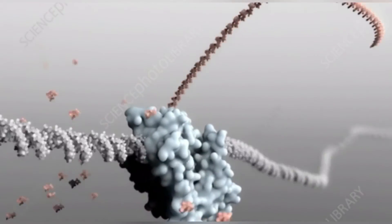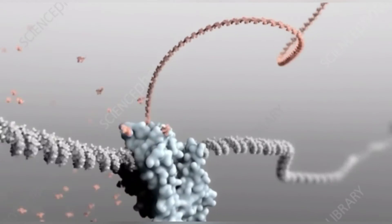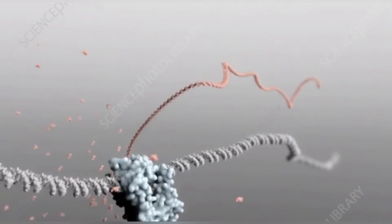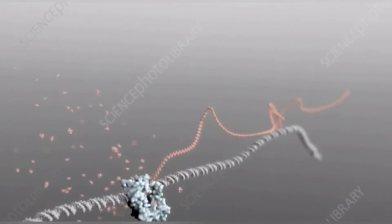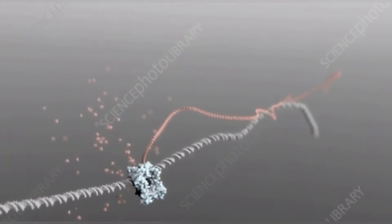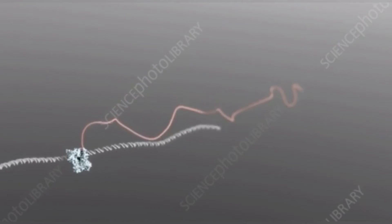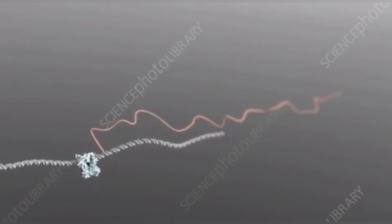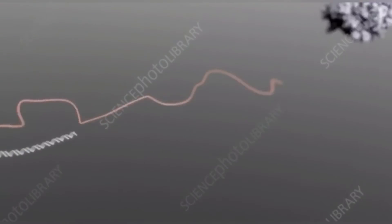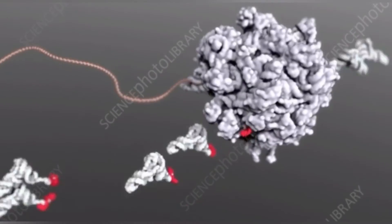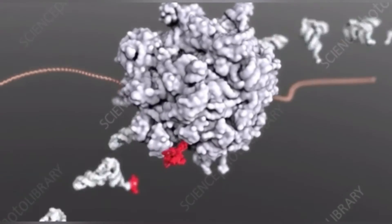As part of the RNA processing pathway, introns are removed by RNA splicing either shortly after or concurrent with transcription. Introns are found in the genes of most organisms and many viruses. They can be located in a wide range of genes, including those that generate proteins, ribosomal RNA, and transfer RNA.